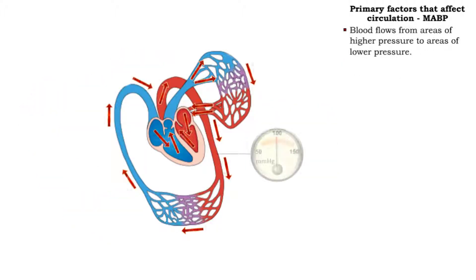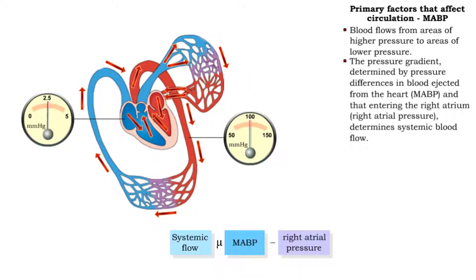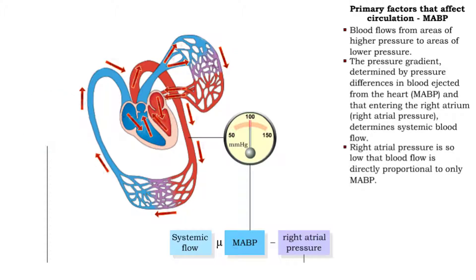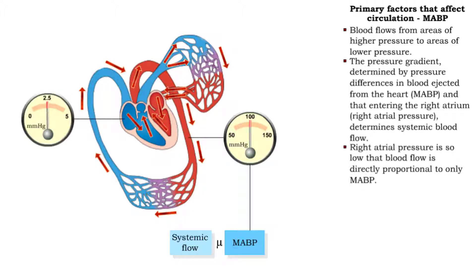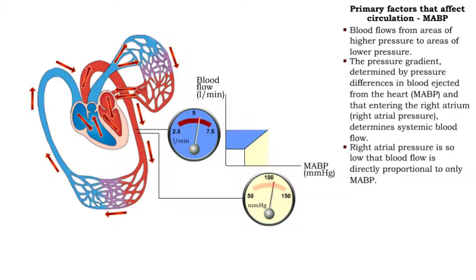Liquids, such as blood, move from areas of higher pressure to areas of lower pressure. In the heart, where systemic blood flow begins, the pressure gradient is the mean arterial blood pressure — the pressure measured as blood leaves the left ventricle, minus the blood pressure as it enters the right atrium. The right atrial pressure is so low that its effect on systemic flow is discounted. Therefore, systemic flow is said to be directly proportional to mean arterial blood pressure.